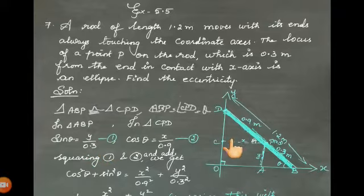Similarly, in triangle CPD, take angle theta. You can see x is the horizontal distance, since this is point x, y. DP is 0.9—that means for theta, x is adjacent side and 0.9 is hypotenuse. The trigonometric ratio is cos theta. Cos theta equals adjacent divided by hypotenuse, which is x divided by 0.9. Name this as equation 2.